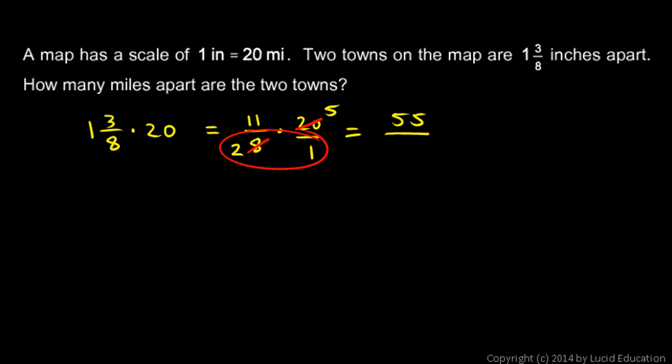And then in the denominator, 2 times 1 gives me 2. So I have 55 over 2, and that's going to be in miles.